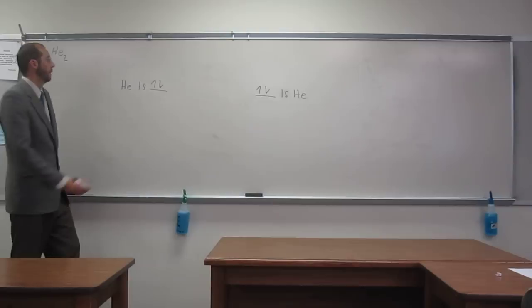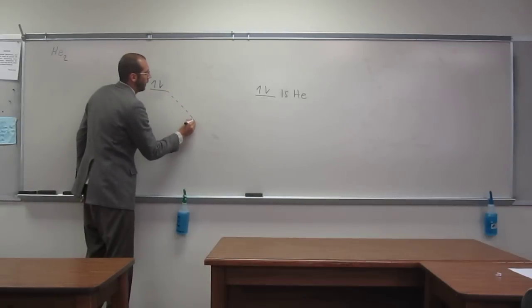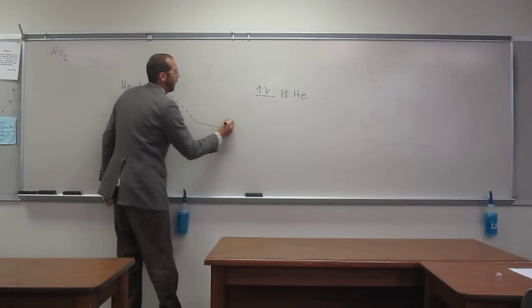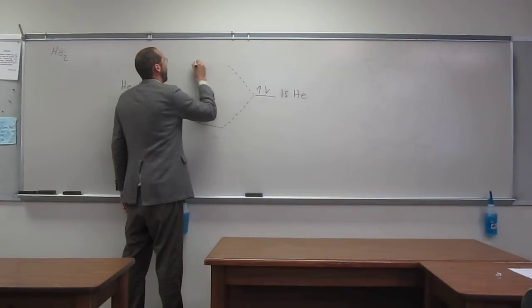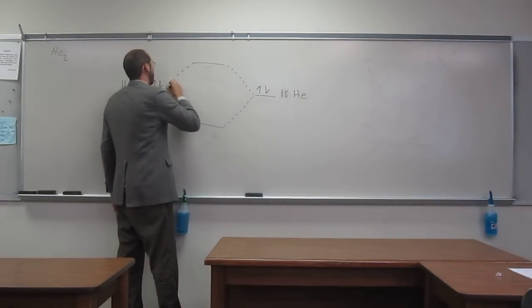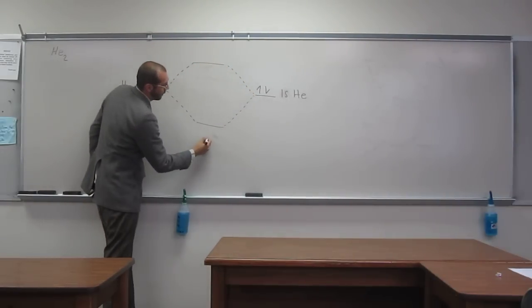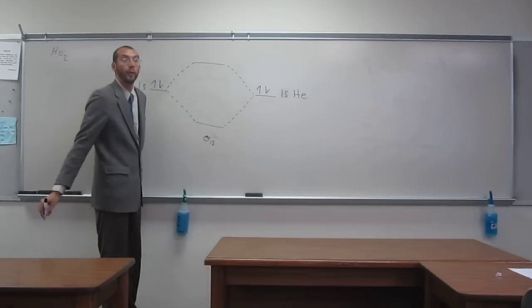Okay, so now what are we going to do? We're going to draw the bonding orbital and draw the anti-bonding orbital. The bonding orbital we call the what? Sigma 1s orbital, very good, Jax.